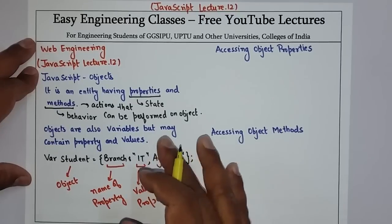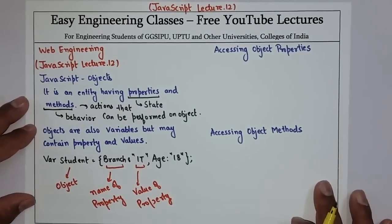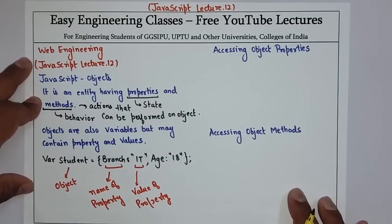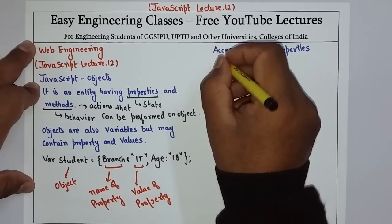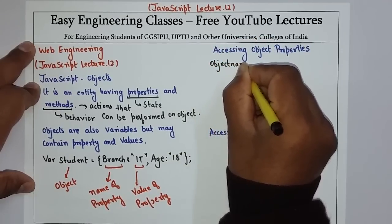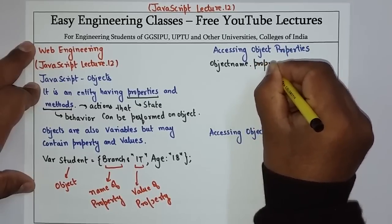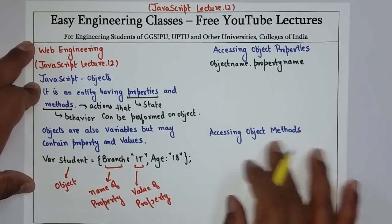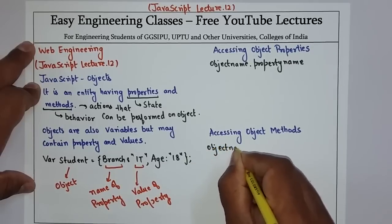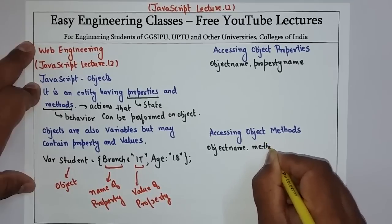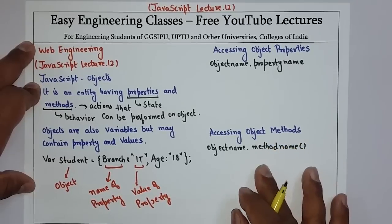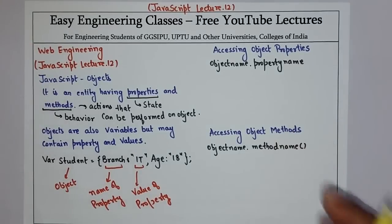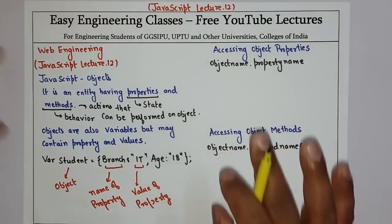Object ke upar kuch actions ko perform karna to woh methods hote hain. To aap dekhte hain ki ek object ki property ko access kaise karoge — to property ko access karne ke liye jo syntax hai, that is: object name dot property name. Using this syntax you can access any object's property. And to access object methods you have to use object name dot method name.